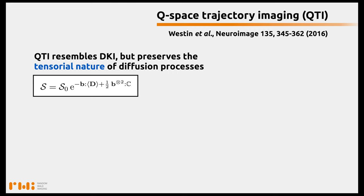QTI resembles DKI, but it preserves the tensorial nature of the diffusion process. Here, for example, the signal in QTI writes as S0 times the exponential of minus the B matrix, or B tensor, with the Frobenius inner product with the average diffusion tensor for the voxel.